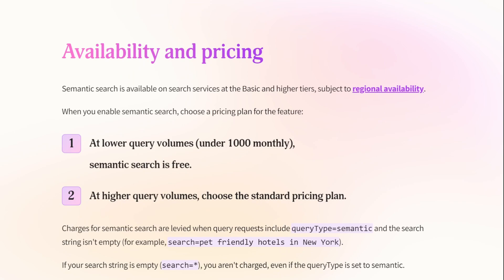Availability and pricing: Semantic Search is available in two tiers. The basic tier offers up to 1,000 queries per month for free, and then for higher volumes there is a standard pricing plan. Charges apply for semantic searches whenever the query type is set to semantic and has a keyword. However, if the query type is semantic but it is a wildcard or empty search, it is considered a regular text search, because the semantic engine is not actually doing anything.